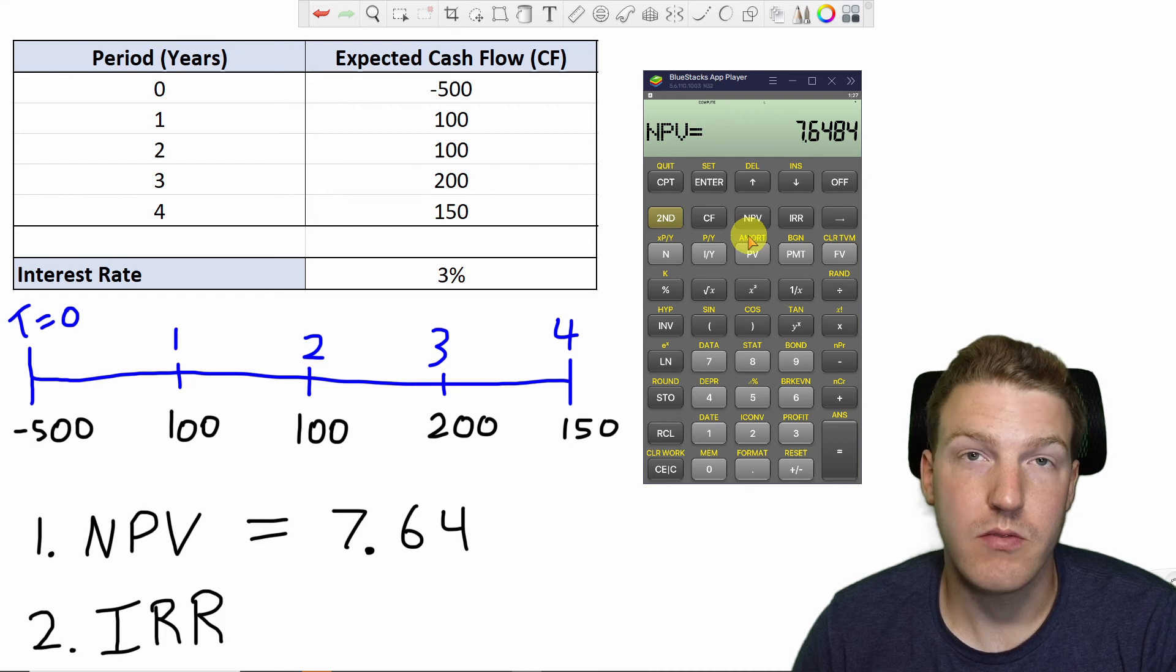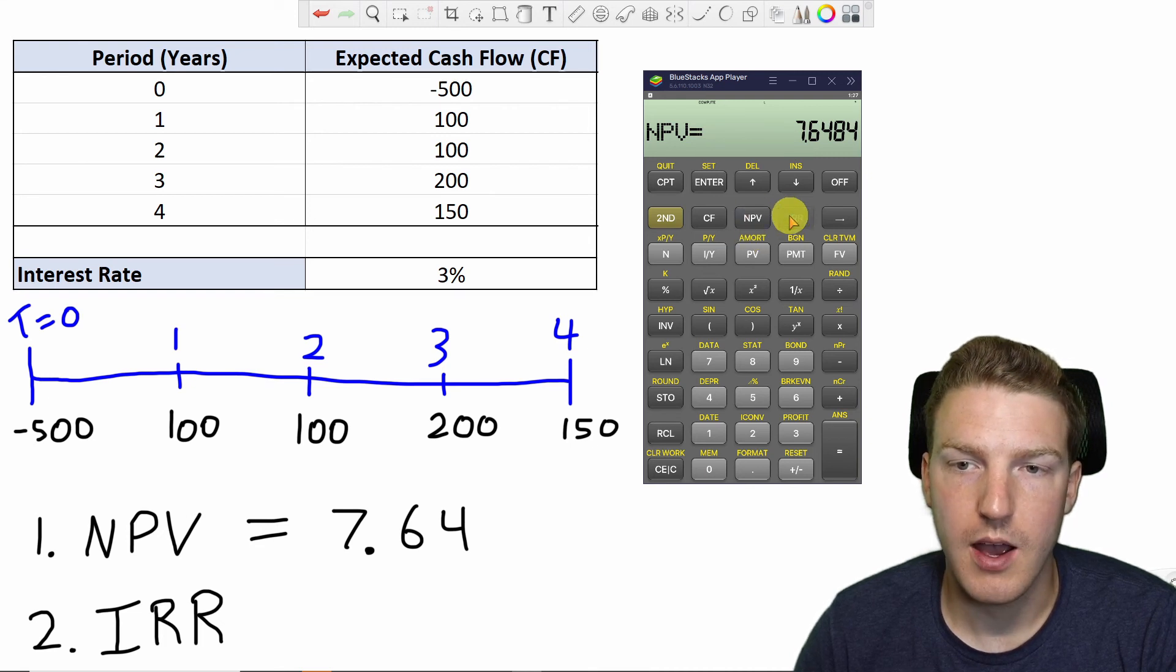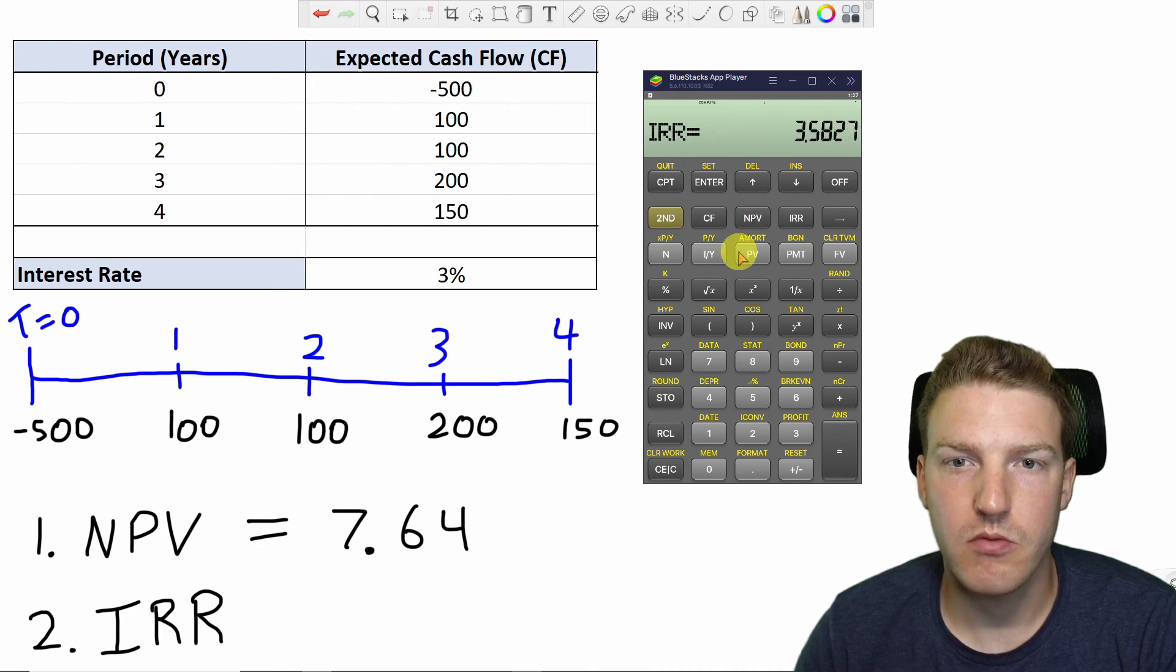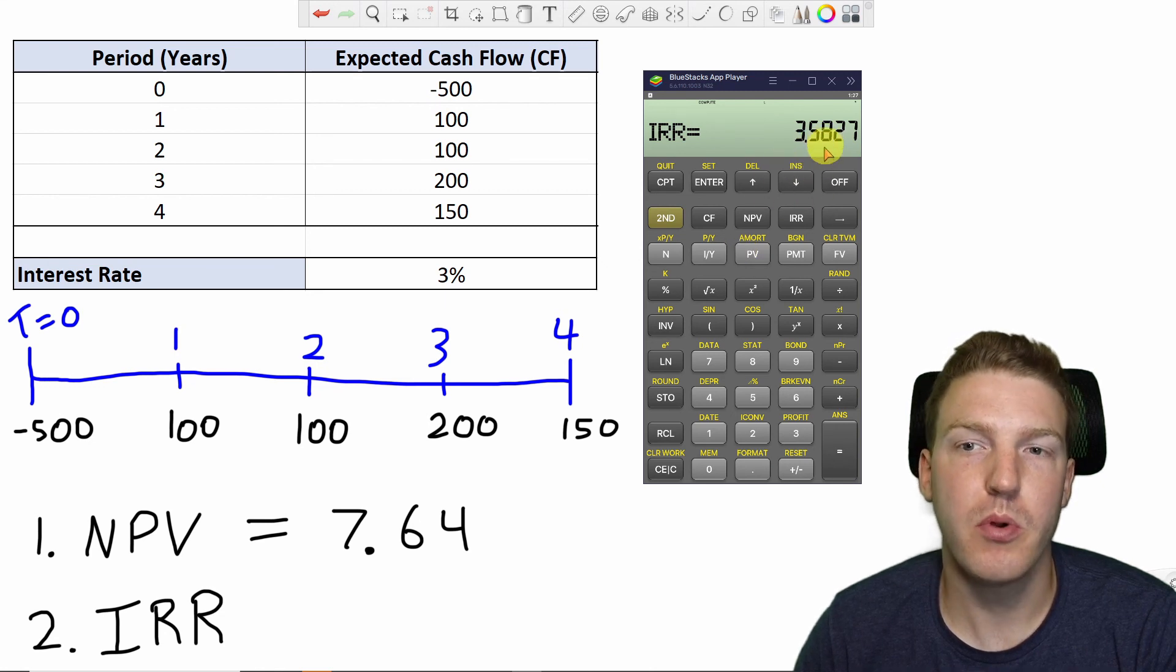And to calculate internal rate of return, IRR, we just hit the IRR button and then compute and find that our IRR for this project is 3.58%. Thank you for watching.